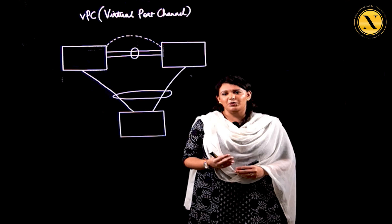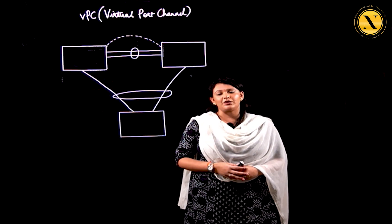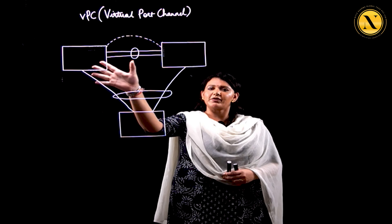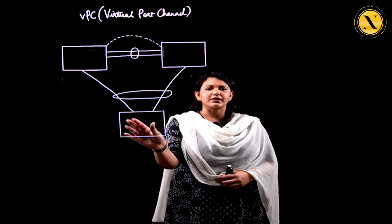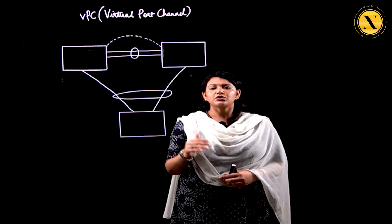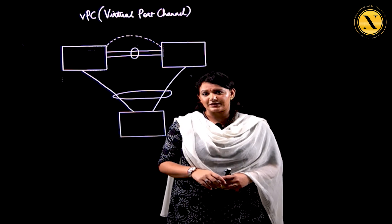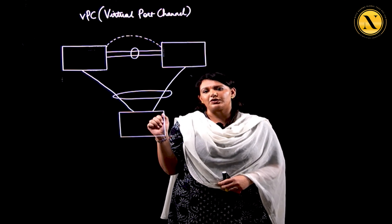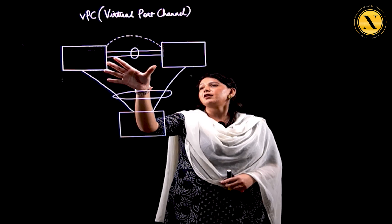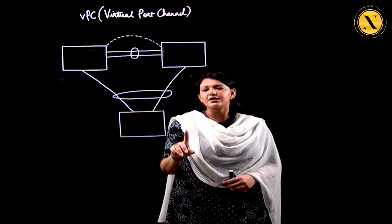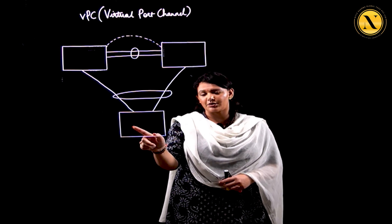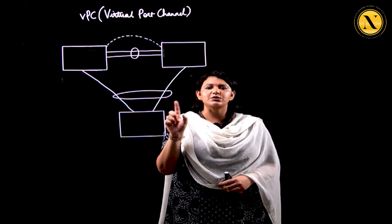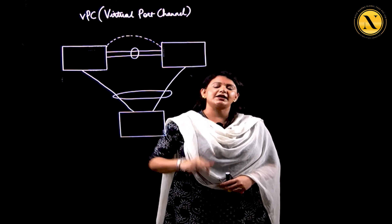VPC, virtual port channel, is basically a layer 2 Nexus technology. You cannot use it on catalyst switches — it is purely Nexus. We have two devices between which we are going to be configuring VPC. These two devices will logically appear as a single device to the device at the bottom, providing device level redundancy at the upstream layer.